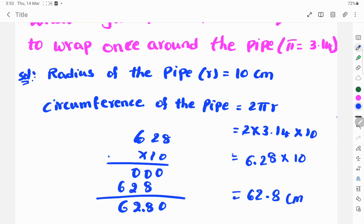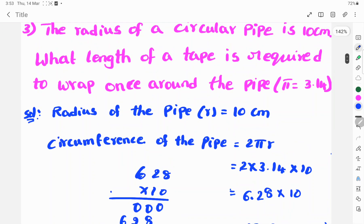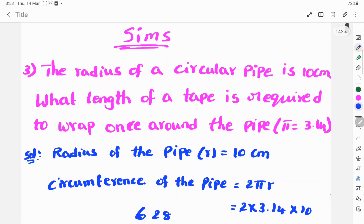That means 62.8 centimeters. This is the circumference of the pipe. This is the solution. Thanks for watching this video. Please subscribe.